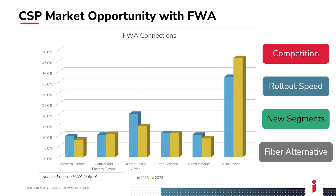Fixed wireless access is an area that has grown significantly in the past three to four years and is planned to grow significantly in the next four or five. This slide shows how different it is in terms of market share per region — almost a large majority of connections in places like Asia-Pac. Based on an Ericsson study, around 130 million connections worldwide exist today, and by 2029, the expectation is that it almost becomes three times that — over 300 million connections.